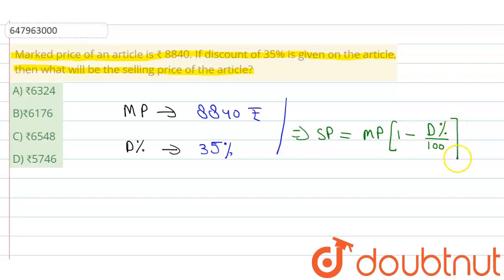तो यहाँ से हम लोग value रखेंगे इस formula में और निकालते हैं अपना selling price. तो SP बराबर MP यानि 8840 into (1 - 35/100).